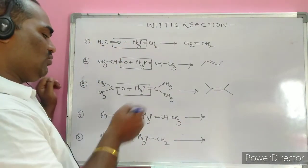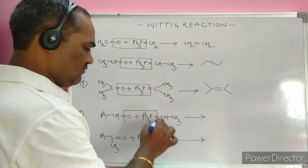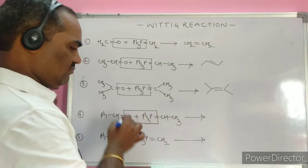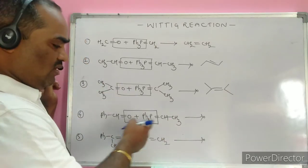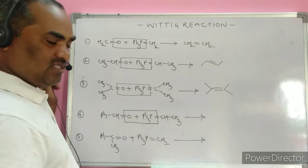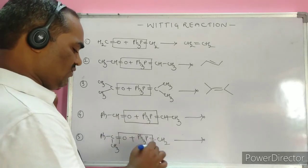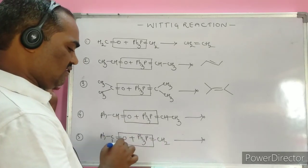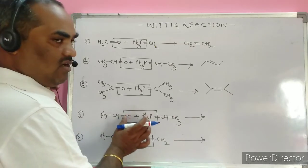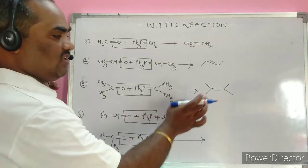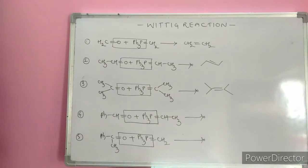When the ketone acetone (propanone) is the carbonyl compound, the product formed is 2,3-dimethyl-2-butene. When benzaldehyde is used, removing the phosphorus oxide gives the corresponding styrene-type alkene. With acetophenone, removing the phosphorus oxide gives the corresponding product.